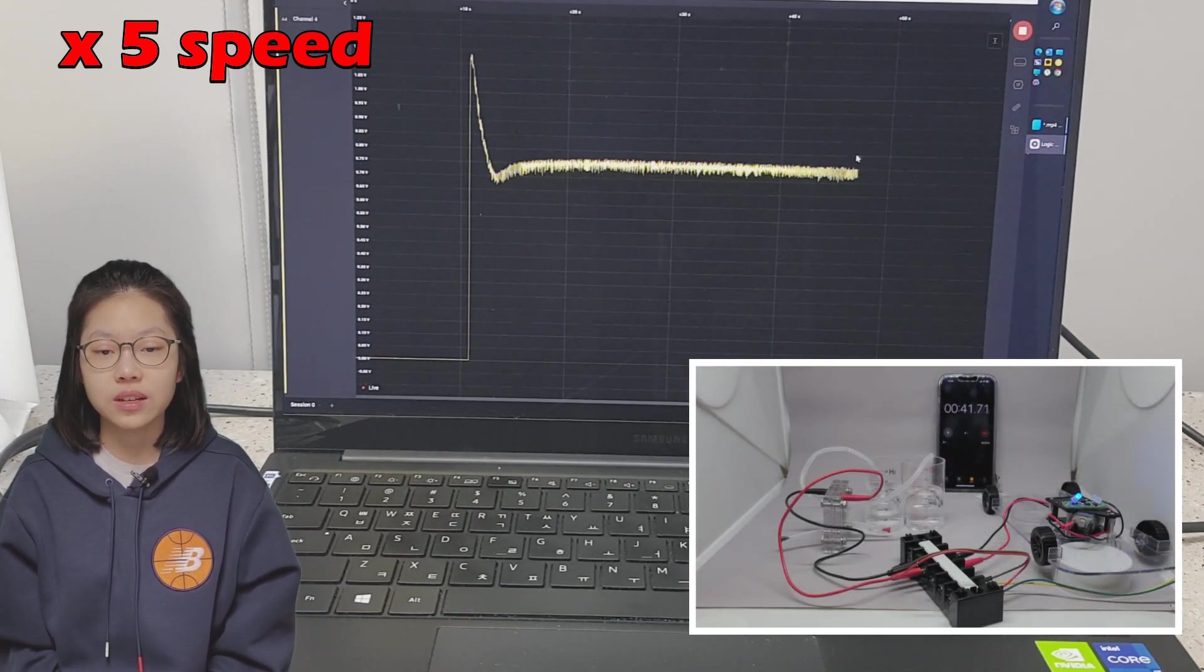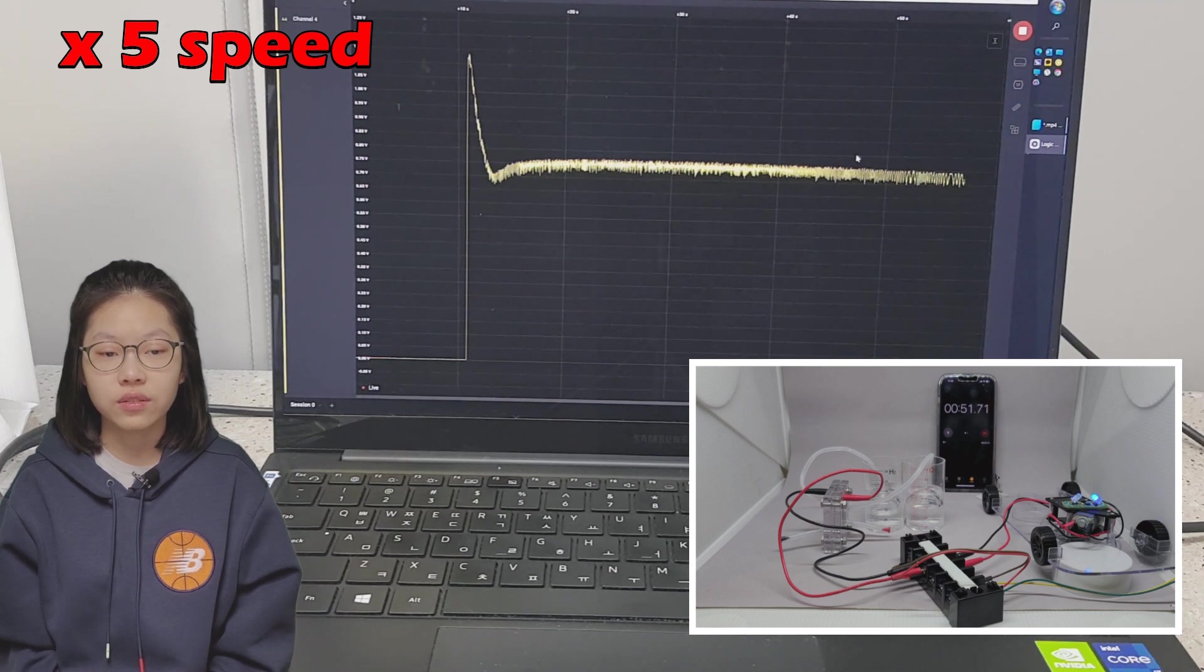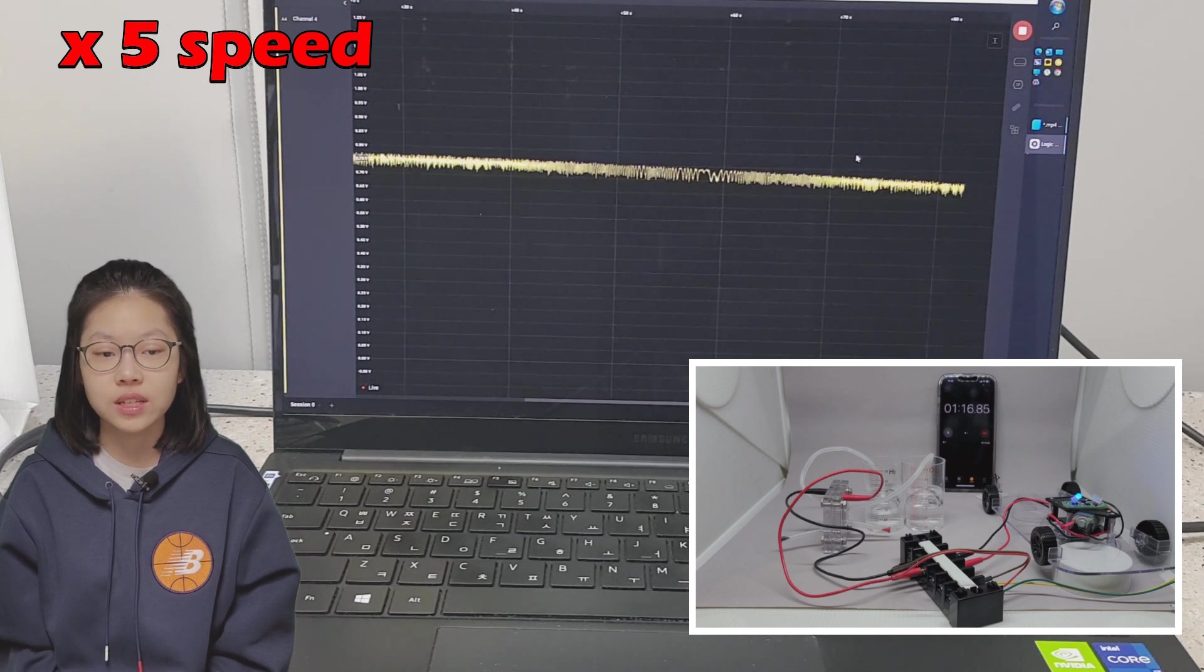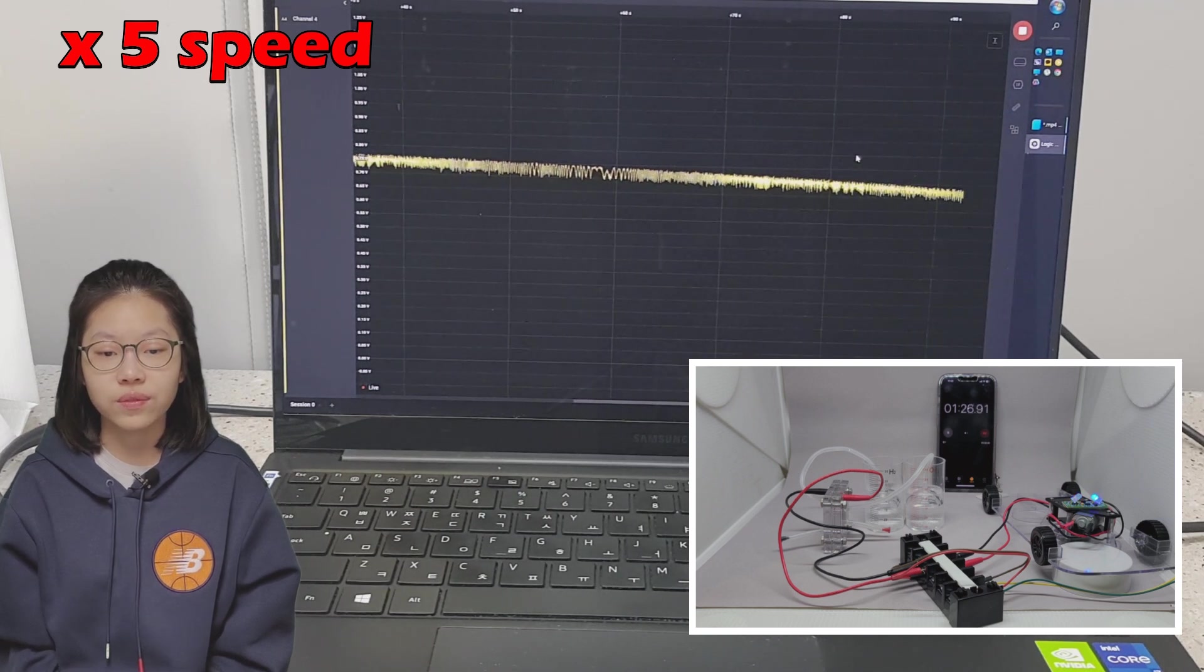The moment the fuel cell and the car kit are connected, the voltage rises and outputs stably at about 0.75 volts, and then it slowly starts to fall.